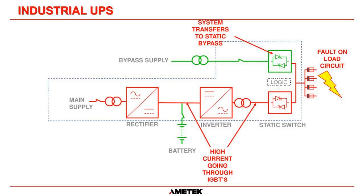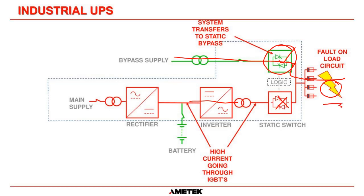The other reason we transfer to bypass during a load fault is that the inverter doesn't have enough stored energy to clear the fault. But bypass is fed from a robust transformer with more than enough power to clear the fault. Once the fault is cleared, the system can transfer back to inverter if auto-retransfer is turned on. If we have a fault on the load circuit, high current through the inverter bridge could damage the IGBTs, so the UPS turns on the bypass static switch to clear the fault while disconnecting the inverter static switch.